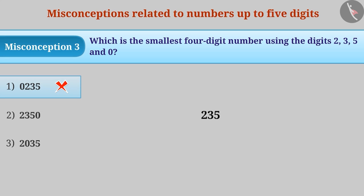This is a misunderstanding. In order to write the smallest 4 digit number, 2, 3, 5 are written in ascending order, but due to confusion as to where to put 0, it is often written after 5. This gives us option 2, which is incorrect.